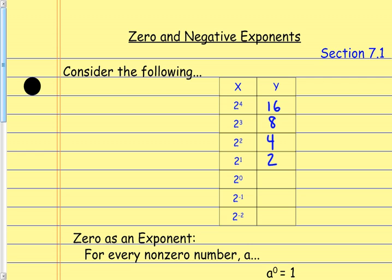Which means 2 to the zero power, following this pattern, would give me 1. It also means that 2 to the negative first, following the same pattern, would give me 1 half — I'm still dividing by 2. And then 2 to the negative second would give me 1 fourth. So I keep dividing by 2 over and over again.